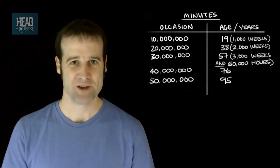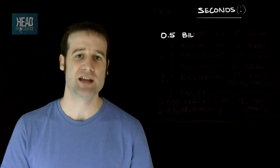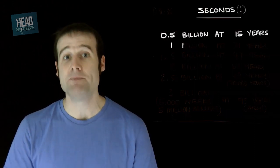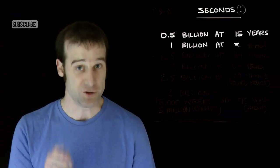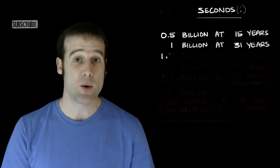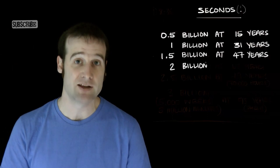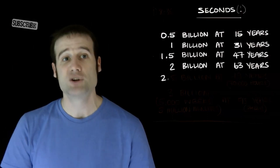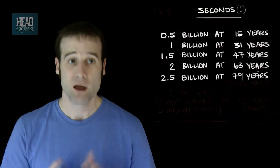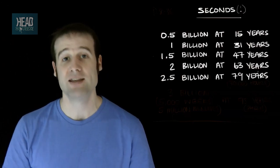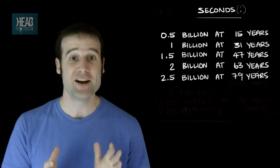Now, seconds. You get half a billion seconds when you're 15. You get 1 billion seconds when you're 31. Do not miss that birthday. You get 1.5 billion seconds when you're 47. You get 2 billion seconds when you're 63. And you get 2.5 billion seconds when you're 79. Oh, which is the same year when you get 70,000 hours.